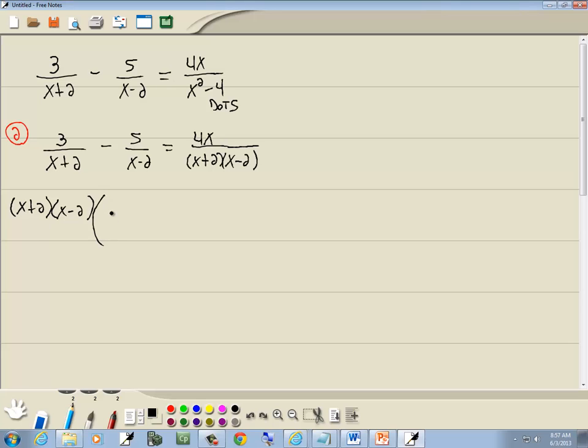And that's what we multiply everything by. We'll multiply it by the 3 over x plus 2. We'll multiply it times our second fraction, and I'll put it after it. It doesn't matter whether you put it before or after. I put it after it so it wouldn't get messed up with the negative that was there. And then I multiply it times the fraction on the right side.